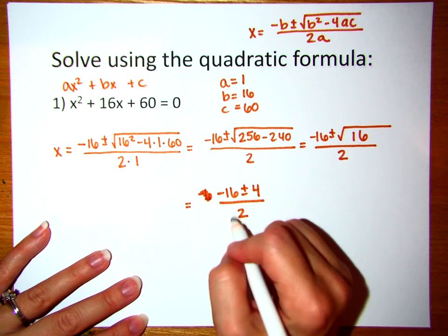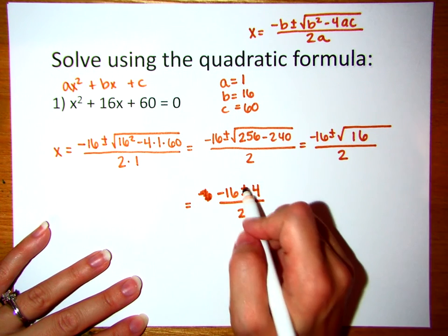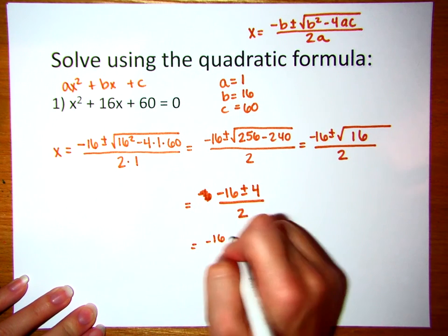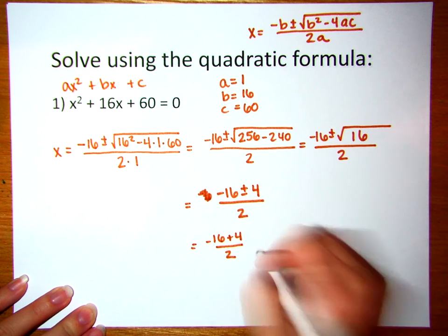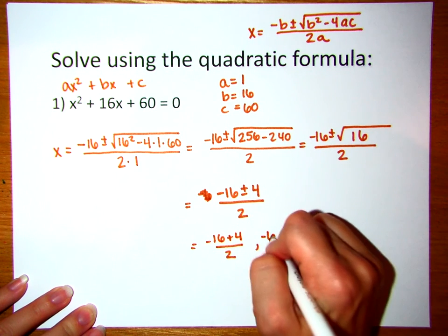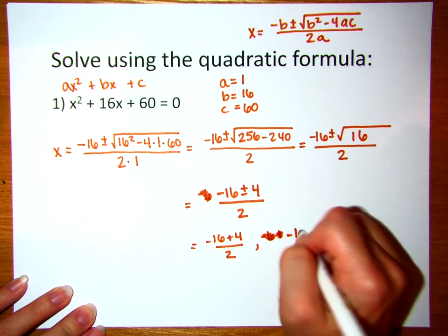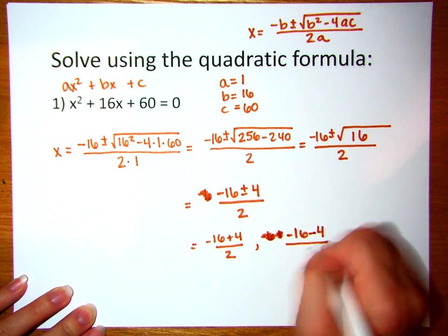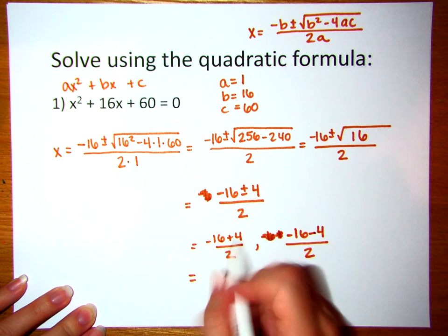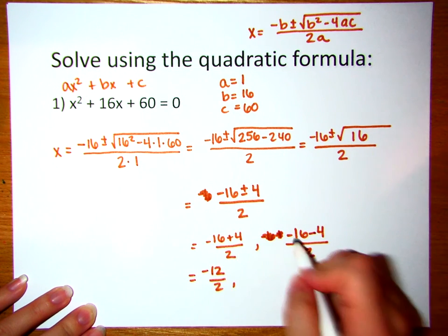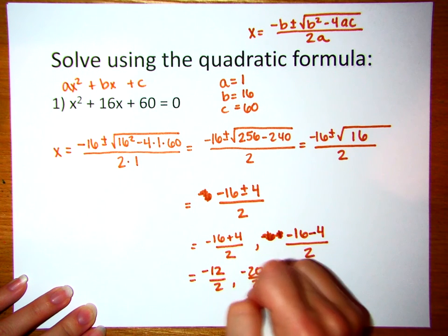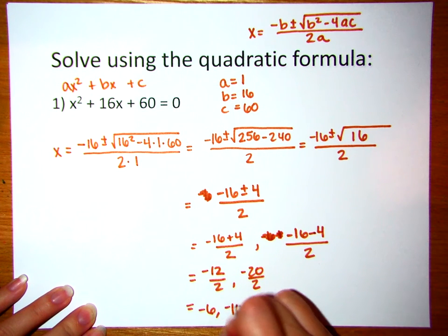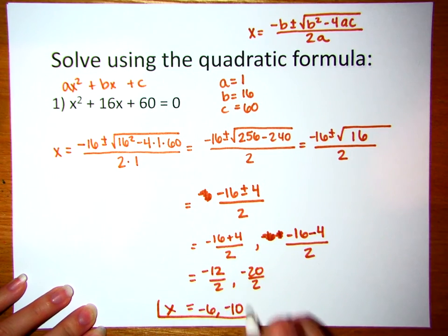At this point we're going to split this into two separate problems with our plus and our minus. The first one is negative 16 plus 4 divided by 2, and the second one is negative 16 minus 4 divided by 2. Negative 16 plus 4 is negative 12 divided by 2, which is negative 6. Negative 16 minus 4 is negative 20 divided by 2, which is negative 10. So x equals both of these values.